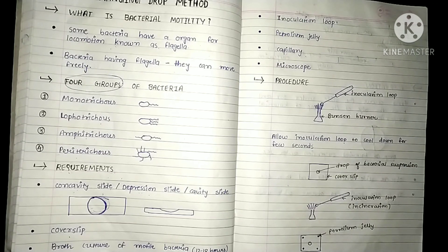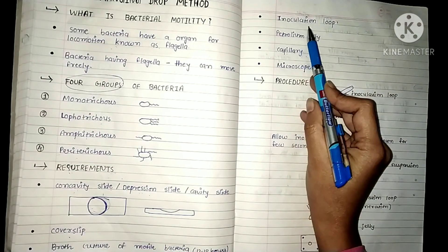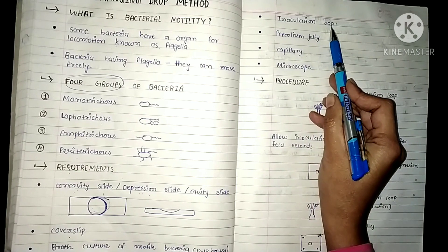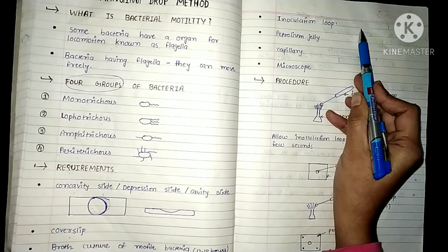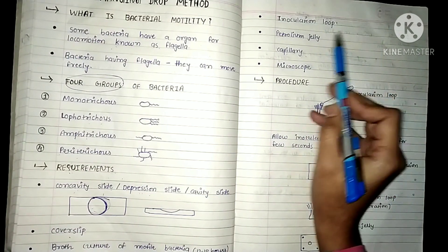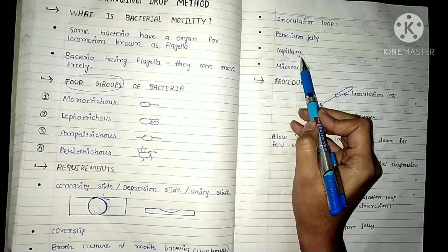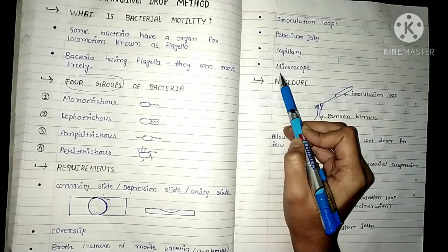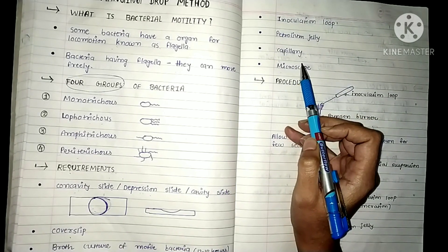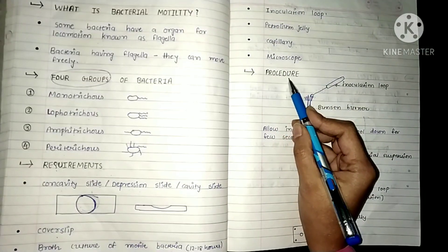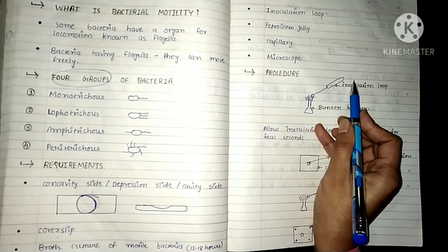We also need a cover slip, and a growth culture of motile bacteria — specifically a young bacterial suspension that should be 12 to 18 hours old. Then we need an inoculation loop to apply the bacterial suspension on the cover slip, petroleum jelly, a capillary, and lastly a microscope.